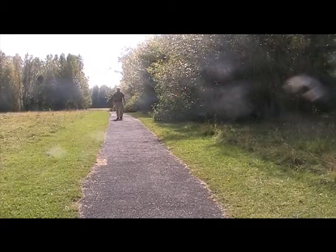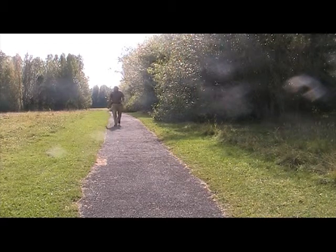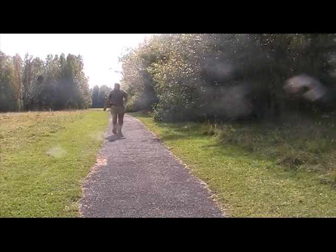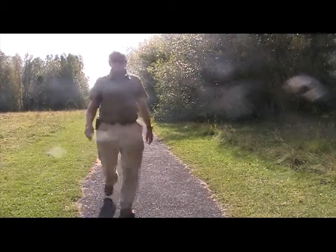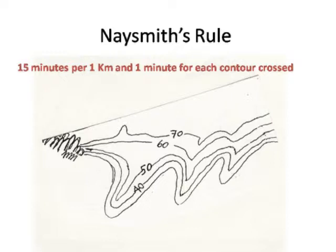If you know the speed you're travelling at, you can work out how long it will take to cover a set distance, making estimating times of arrival easy. Naismith's Rule is a good way of calculating your speed of travel across the ground — basically you take 15 minutes to walk one kilometer, then add a minute for every contour line you cross going up or down. This is a good starting point, but you need to find out your own speed; once you've done that, calculating your time of arrival becomes very easy.